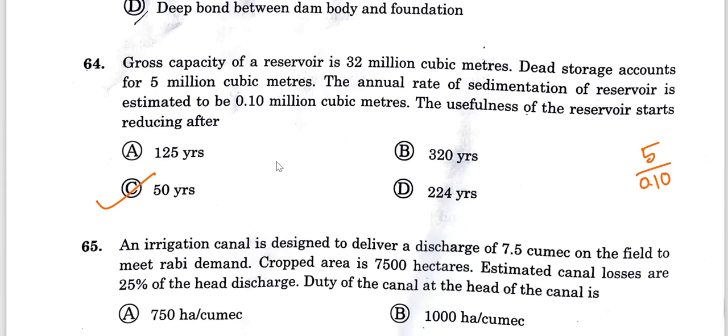Question 64: Gross capacity is 32 million cubic meters. Annual rate of sedimentation is 0.10 million cubic meters. If you divide 5 by 0.10, you will get 50 years as the answer.